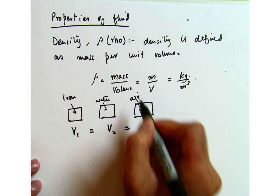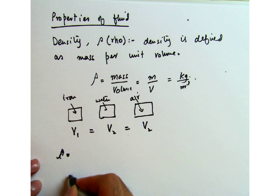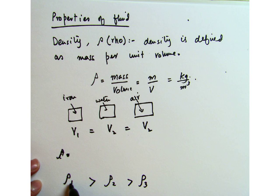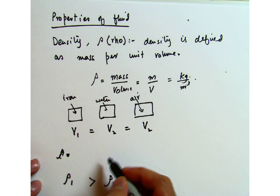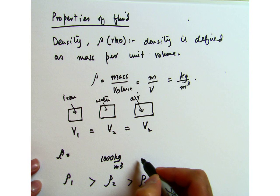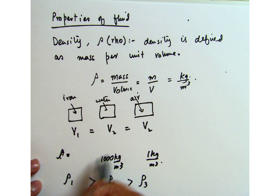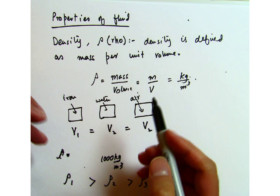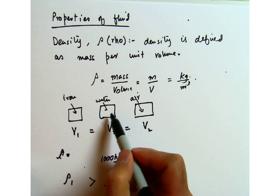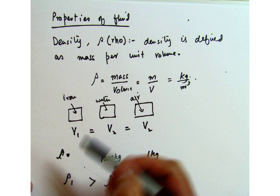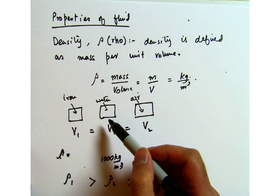The density of water at four degrees Celsius is 1000 kg per meter cubed. For iron it is definitely much higher. Even though you can compress air and change its density, for now the solid has the highest density compared to liquid, and gas has the lowest density.